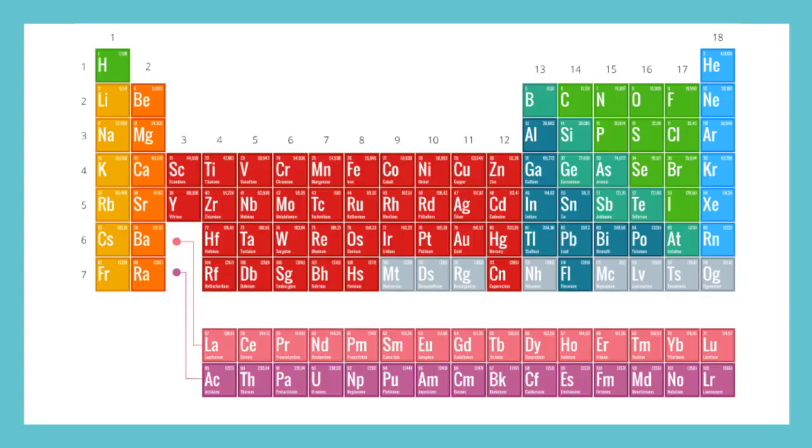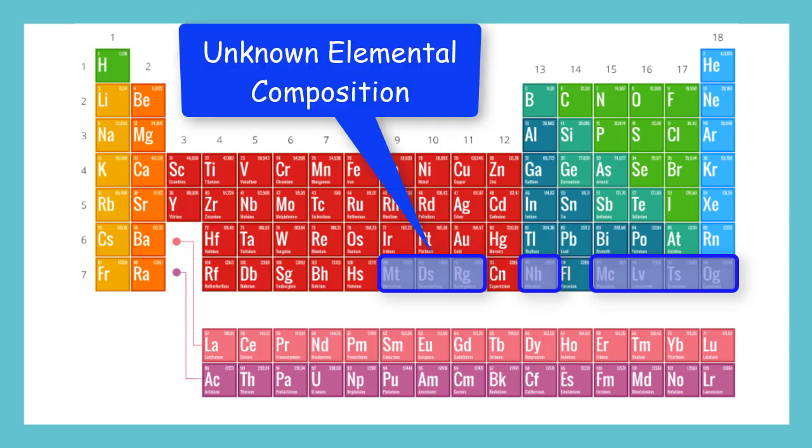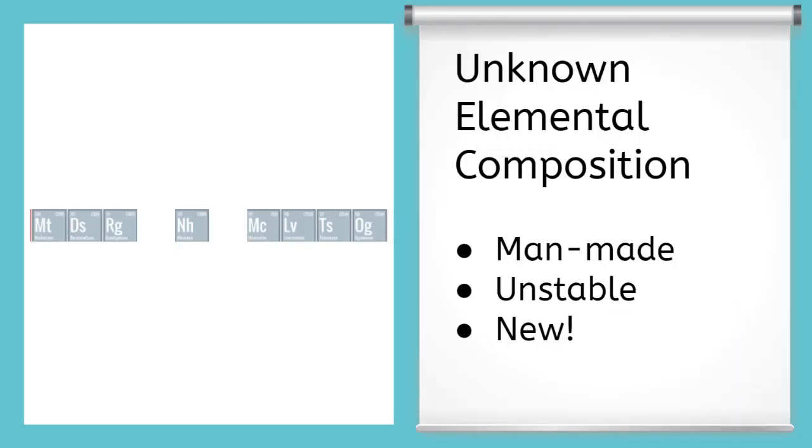Lastly, we're going to point out these gray boxes down here. These are called unknown elemental composition. And they're all in period 7. These elements in period 7 are all made by scientists in the lab. And most of them are metals and very unstable. So far, they're only used for research to help scientists understand how atoms work.